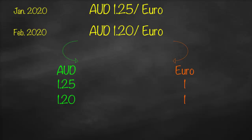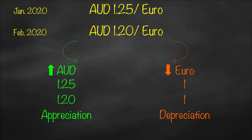Consequently, what happened to the value of the euro? It becomes lower, because the same one euro will buy fewer units of the other currency — Australian dollar in our example. Therefore, the value of the euro will go down — which is called depreciation — and the value of Australian dollar will go up — which is called appreciation.